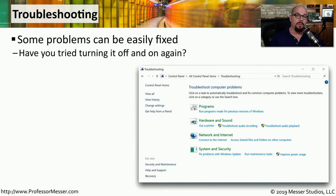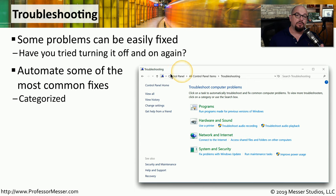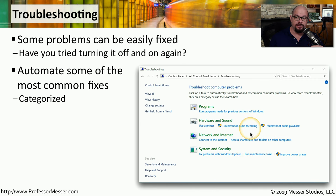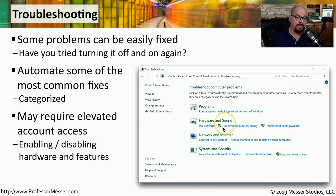When you run into a problem in Windows, sometimes the troubleshooting process can be relatively complex. Inside the Troubleshooting Control Panel applet, you'll get a categorization of troubleshooting tips for programs, hardware and sound, network and internet, and system and security. Some of these troubleshooting options require elevated account access, so it may require an administrator to run through some of these troubleshooting tasks.